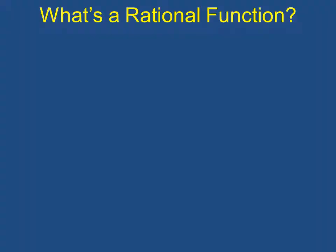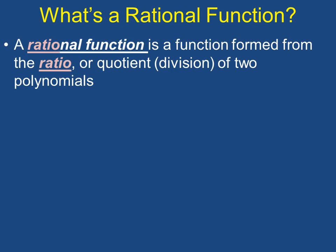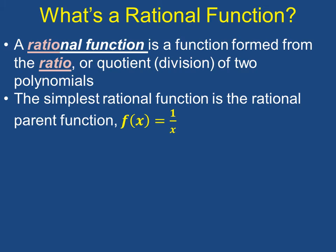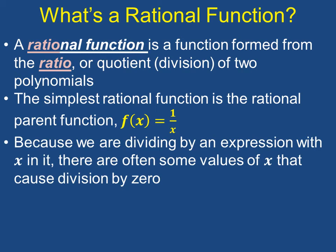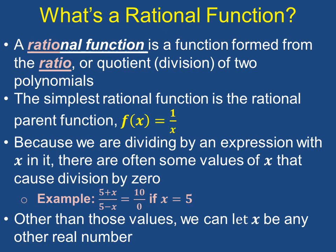What exactly is a rational function? A rational function is a function formed from the ratio, or quotient, which is division, of two polynomials. The simplest rational function is the rational parent function, which is f of X equals 1 over X. Because we're dividing by an expression with X in it, there are often some values of X that cause division by 0. For example, the function 5 plus X divided by 5 minus X will equal 10 divided by 0 if X is equal to 5. Other than those values, we can let X be any other real number.